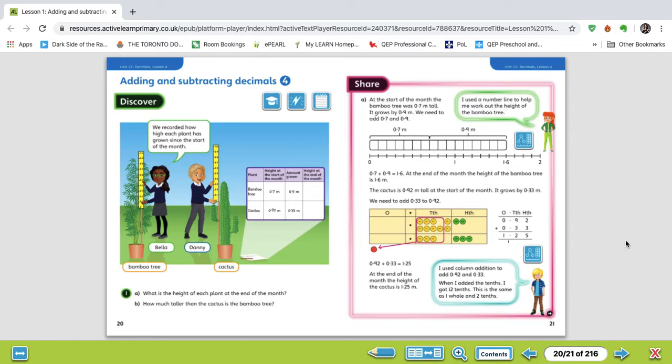So looking at it, we've got our bamboo tree and we have our cactus. So in the table, it's been documented the height at the start of the month and the amount that it has grown. So we're adding those two values together to get the height at the end of the month.